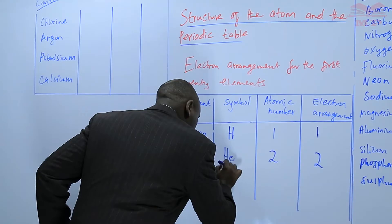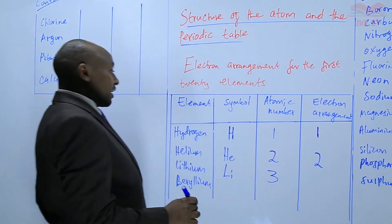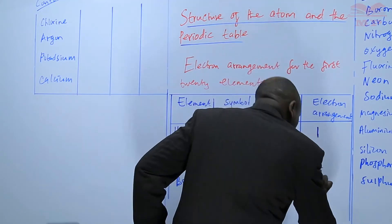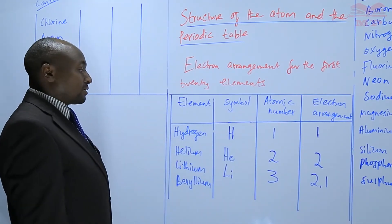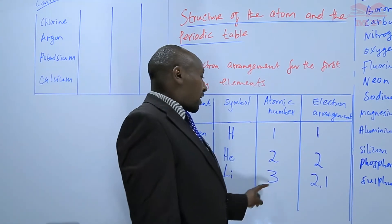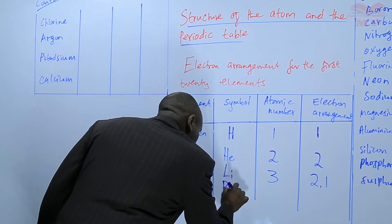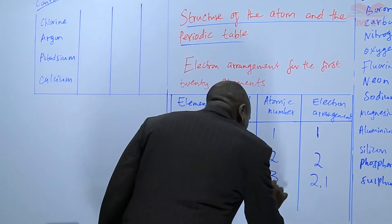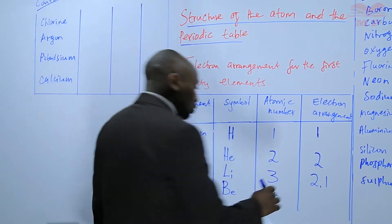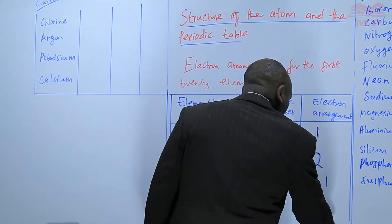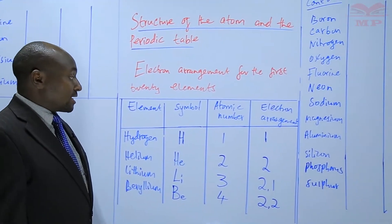Lithium - the symbol is Li, atomic number is 3, and therefore the electrons are 3. The arrangement will be 2, then 1. Two electrons in the first energy level, then it is full. The remaining 1, you take it to the next energy level. Then beryllium - Be, the atomic number is 4, the number of electrons are 4. The arrangement will be 2 in the first energy level, and then we are left with 2, we put them in the second energy level. So 2, 2 is the electron arrangement.